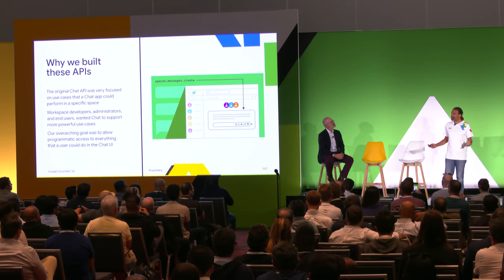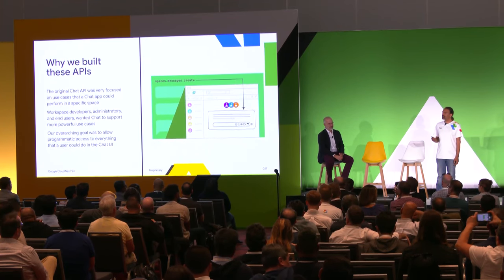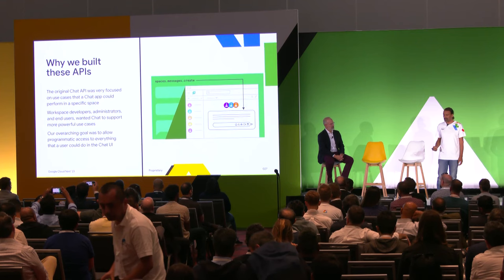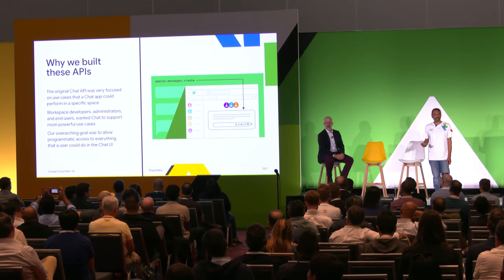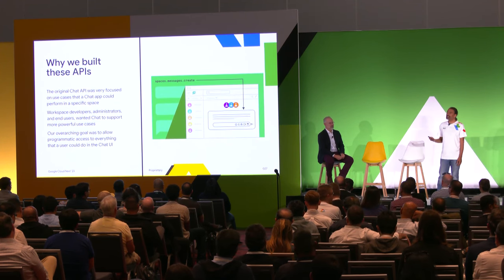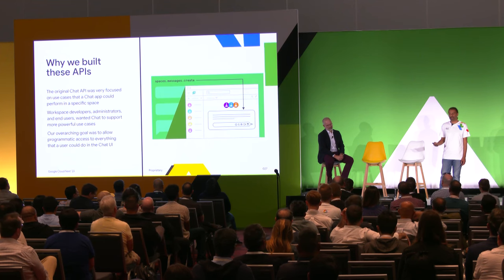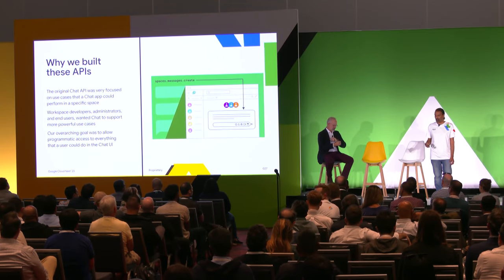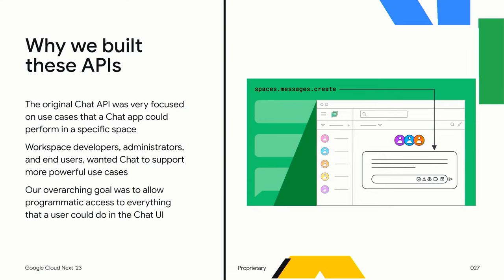Thanks, Ramesh. As most of you are aware, the original chat API was very focused on use cases mimicking those of a support bot — a very popular example being a help desk bot that users could ask questions to, and it would simply answer those questions. While this worked really well for that support bot use case, it didn't meet all of the use cases that our workspace developers, admins, and end users were asking for — including being able to create a chat space programmatically or read all of the chat messages in a space to be more conversational with that user.